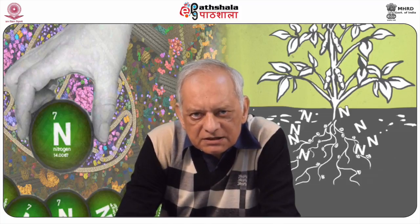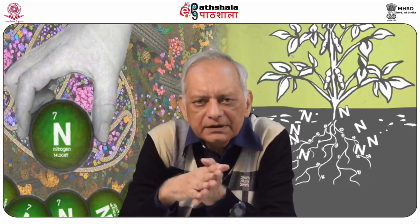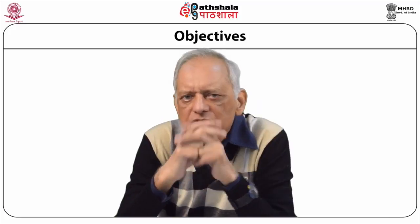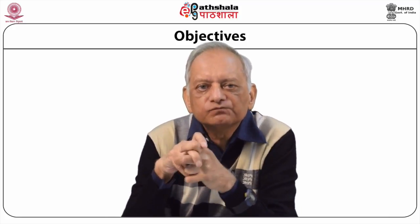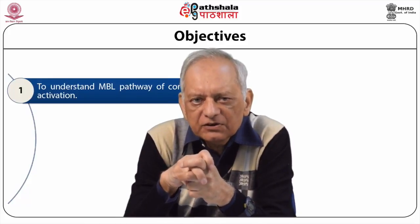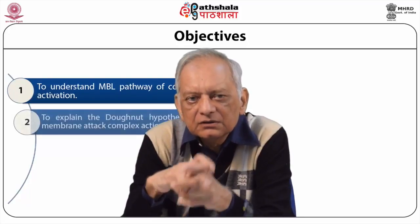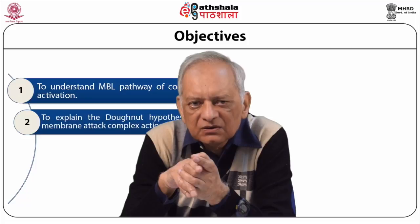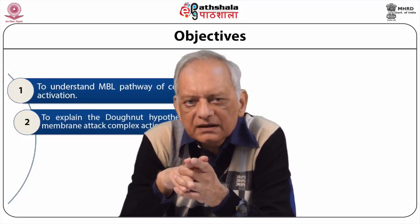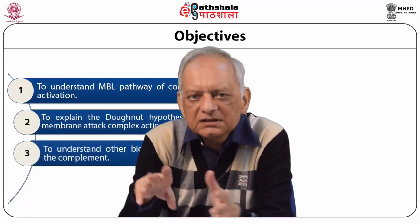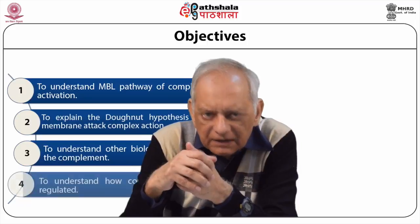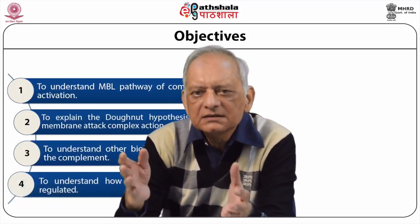In today's module we will learn about yet another way of initiation of complement activation. We will also look at MAC action in more detail. Finally, we will be discussing some other effects of the complement and its regulation. The objectives of this module are to understand the MBL pathway of complement activation, which is the third pathway, to explain the donut hypothesis for the membrane attack complex action, to understand other biological effects of the complement, and finally to understand how complement action is regulated.